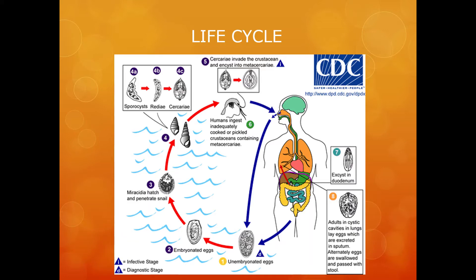Metacercariae is the infective stage for a mammalian host, and human infections with Paragonimus westermani arise from the consumption of inadequately cooked crab, crayfish, or any crustacean that harbours the metacercariae of the parasite. Metacercariae then excyst in the duodenum, penetrate the intestinal wall to the peritoneal cavity, then through the abdominal wall and diaphragm to the lungs, where they become encapsulated and develop into adults.